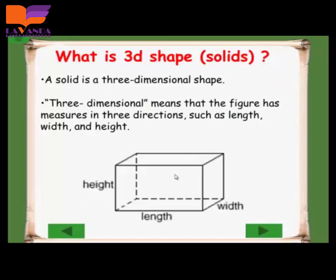What is the solid? The solid is the three-dimensional shape. We already know about the two-dimensional shape. Let's know the three-dimensional shapes. Three-dimensional shapes means that the shape we can measure it with three directions, such as length, height, and width.